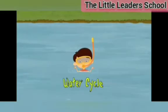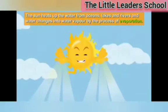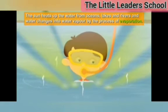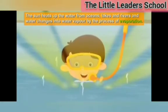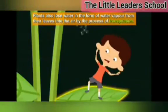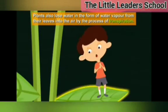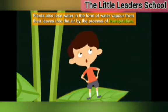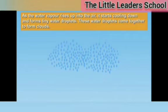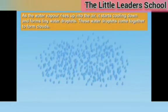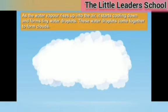The last topic is the water cycle. The sun heats up water from the oceans, lakes, and rivers, and water changes into water vapour by the process of evaporation. Plants also lose water in the form of water vapour from their leaves into the air by the process of transpiration. As water vapour rises up into the air, it cools down and forms tiny water droplets. These water droplets come together to form clouds — this process is called condensation.